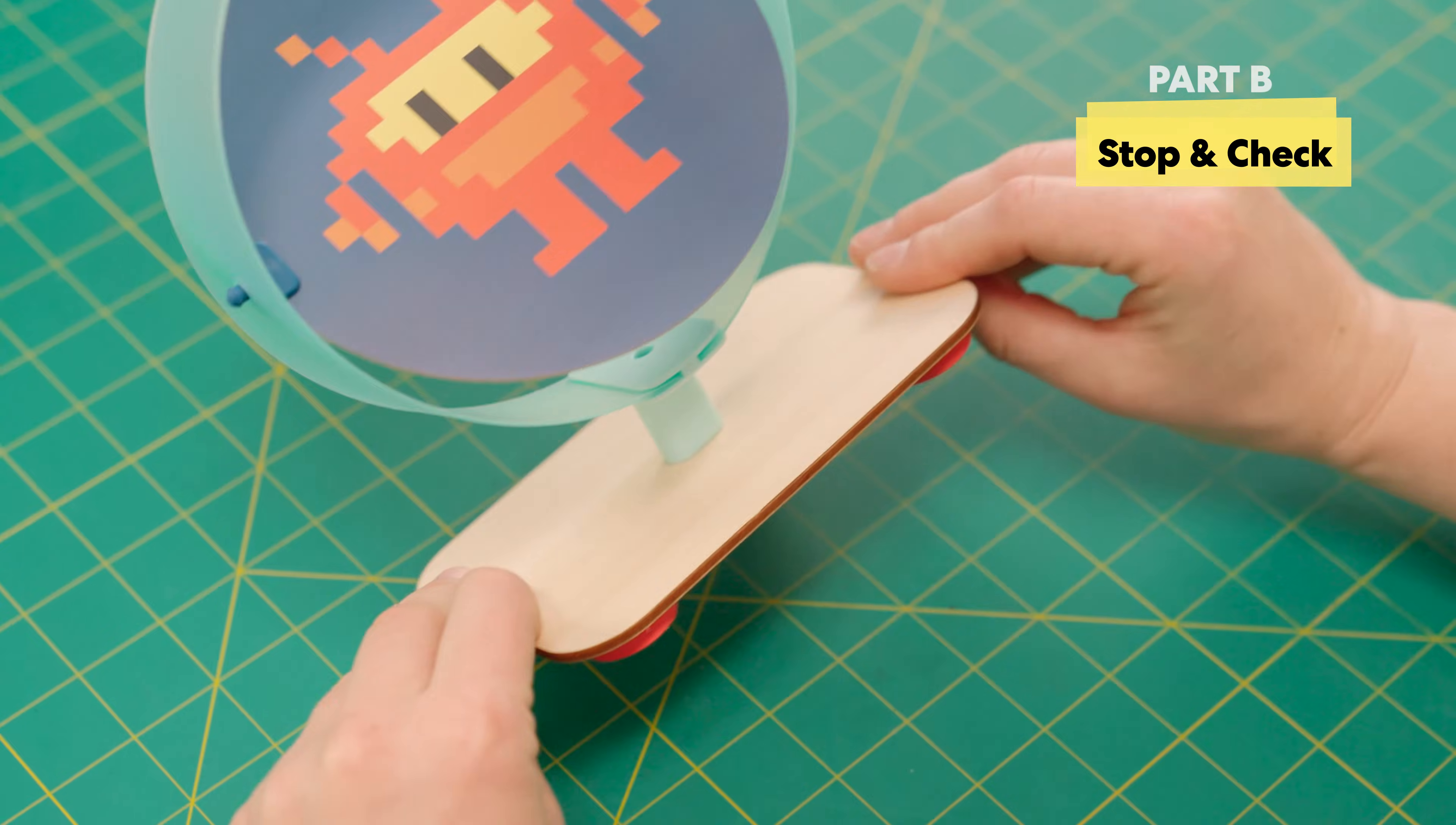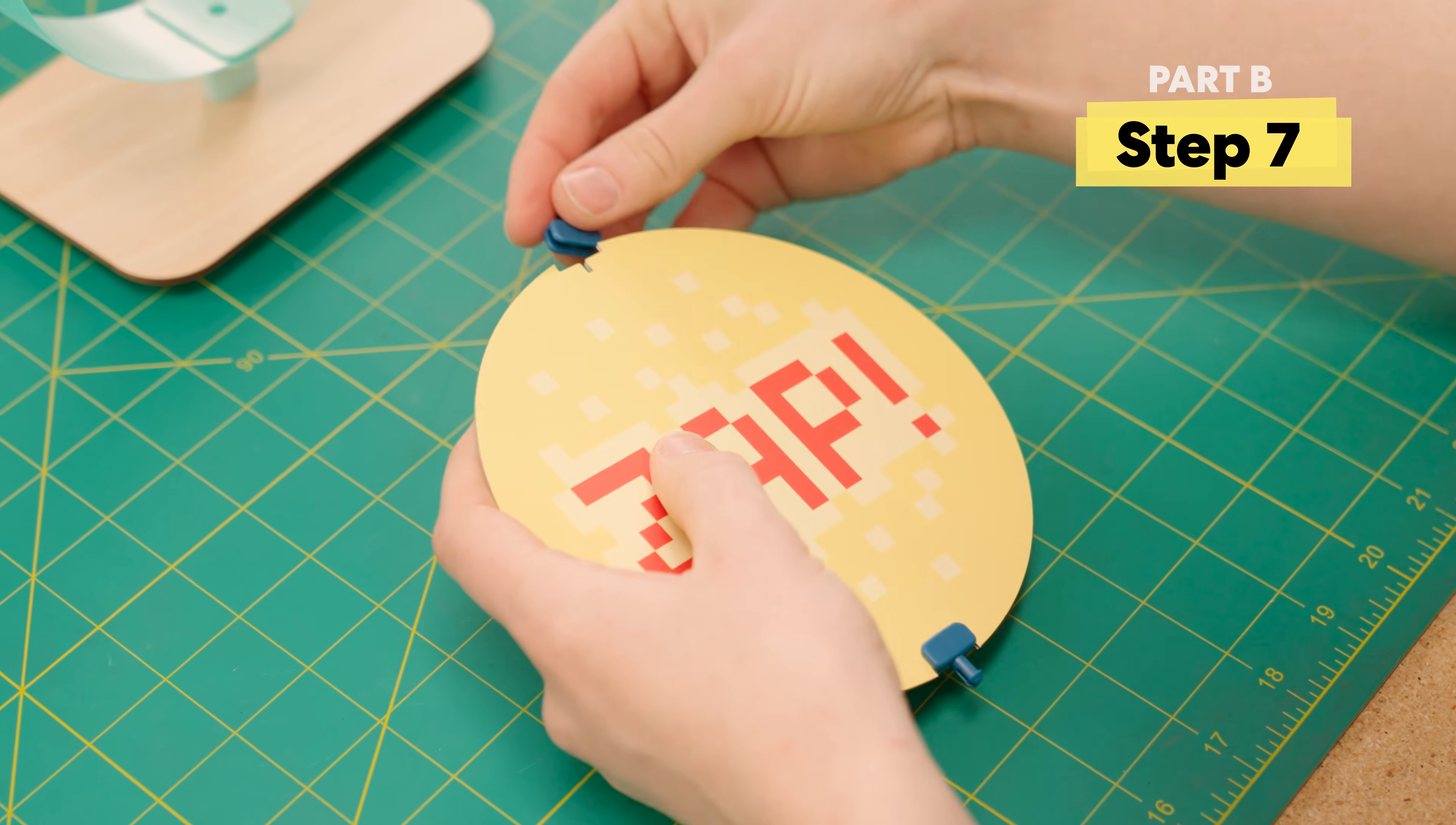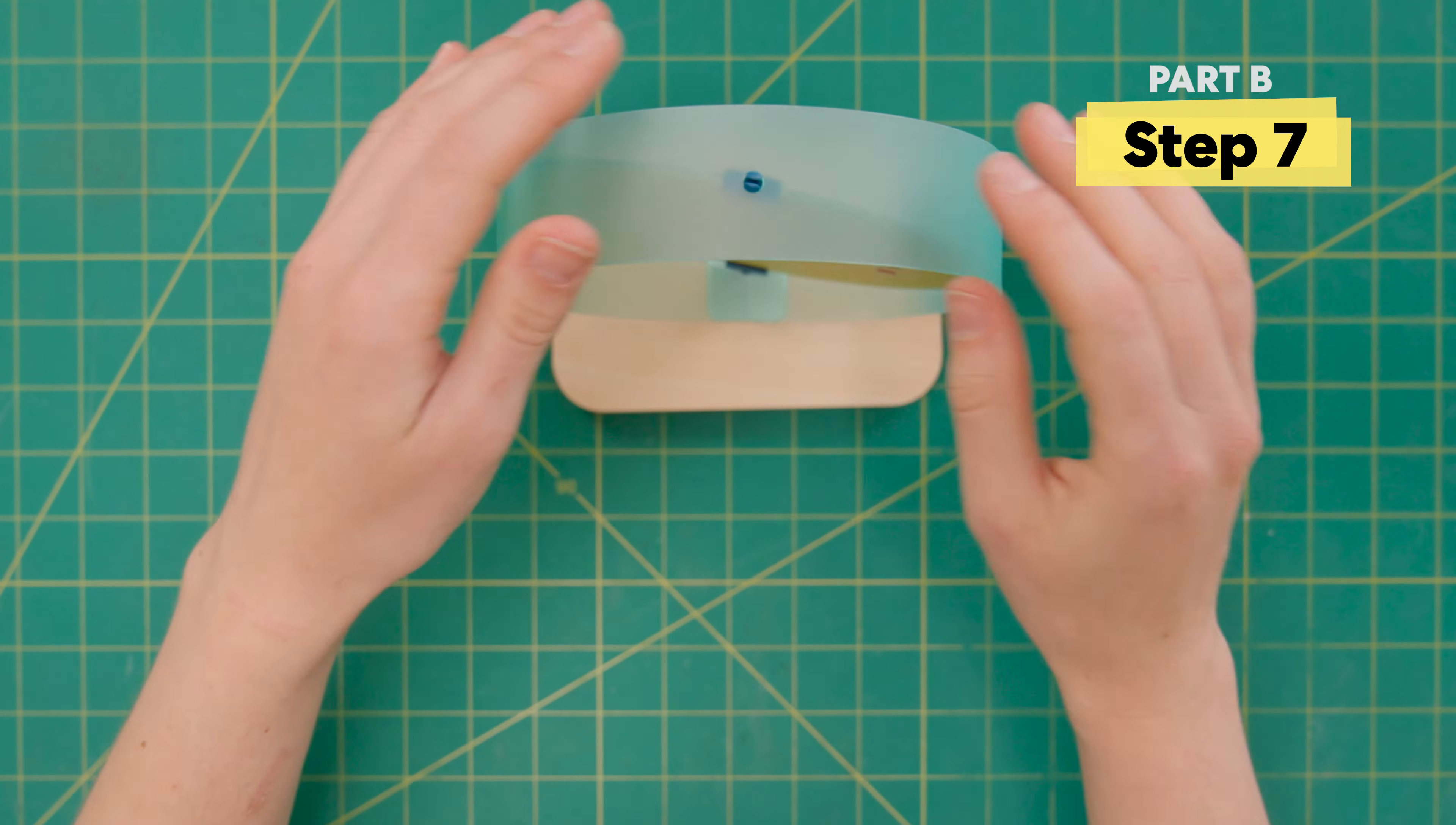Perfect. Next, let's build a vertical target. So, we're going to attach the target clips again. We're going to go ahead and slot these in right here. First, one side and then the other.